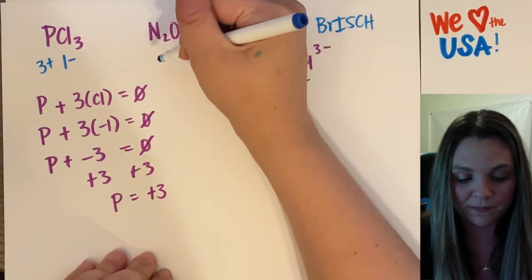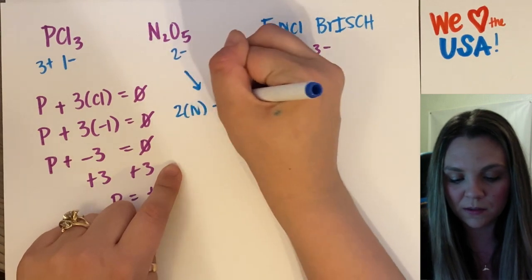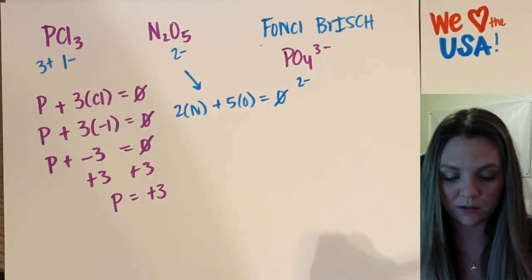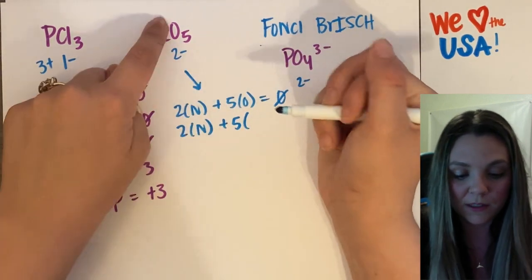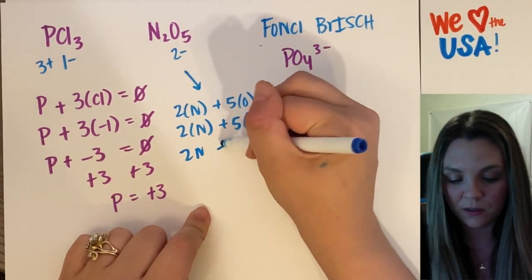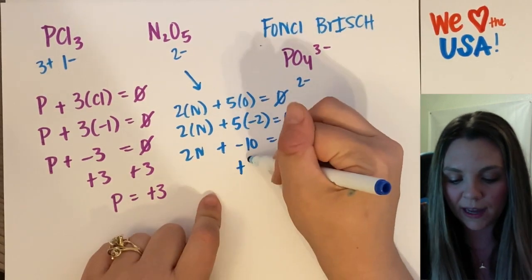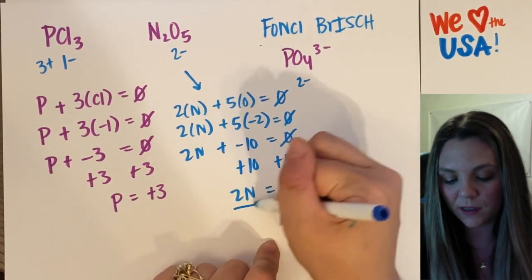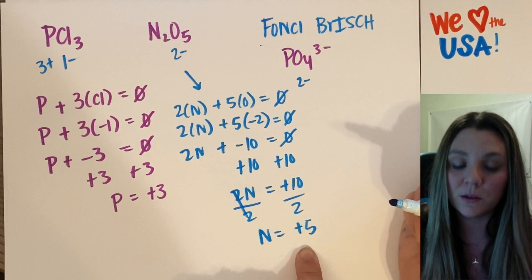Let's do N2O5. Two nitrogens plus five oxygens should add up to zero because there's no charge. So two times nitrogen plus five times negative two equals zero. Two N plus negative ten equals zero — add ten to both sides, two N equals positive ten, divide by two, and N equals plus five.